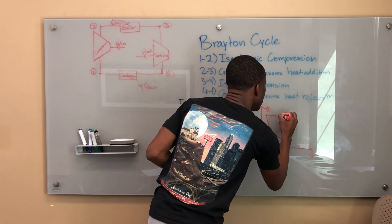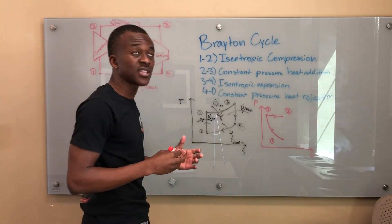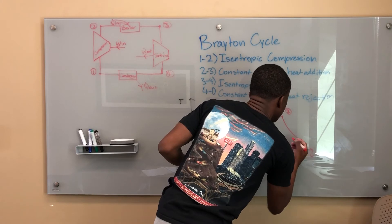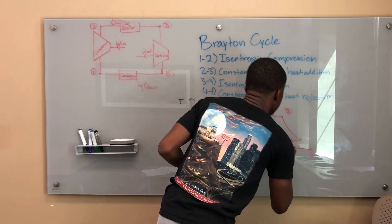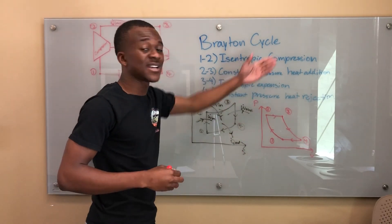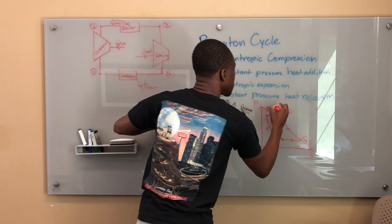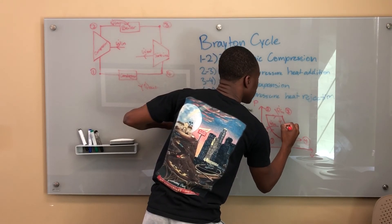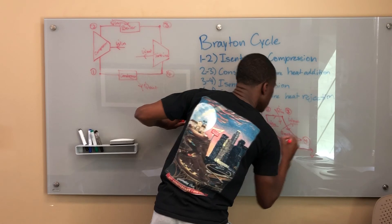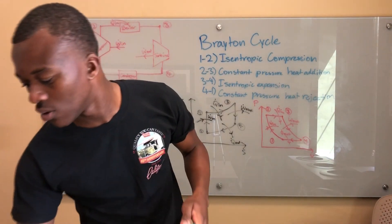From three to four it's isentropic expansion: volume gets bigger and pressure goes down, curving outward. Then you match up the points and it goes back for heat rejection, completing the cycle at point four back to one. On the P-V diagram: one to two is work in, two to three is heat in, three to four is work out, and four to one is heat out.